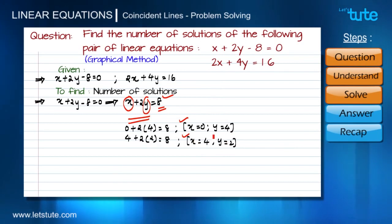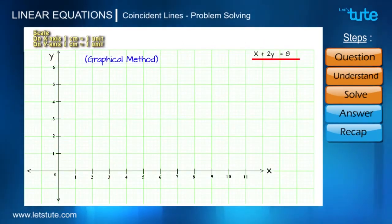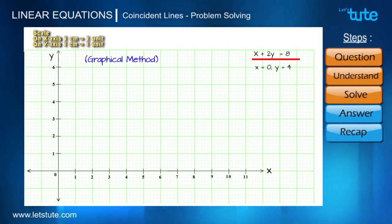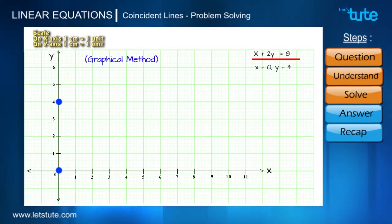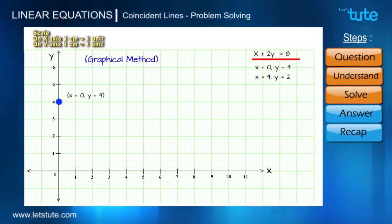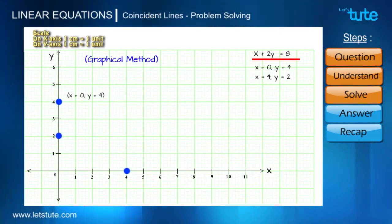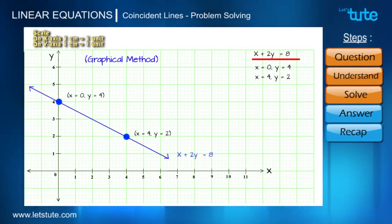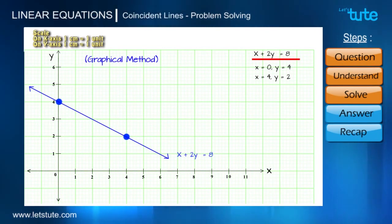Let us plot these points and draw the graph for the equation x plus 2y equals 8. The first point is x=0, y=4 — since x is 0, this point lies on the y-axis. The second point is x=4, y=2. Joining these two points, we get the straight line for the equation x plus 2y equals 8.